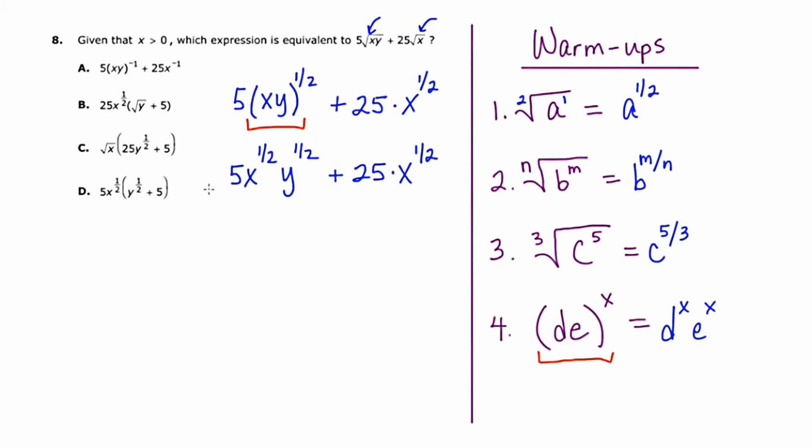Now, as I scan my answer choices, nothing looks exactly like this. But there are a few things that have these one half powers all over the place. Choice d does, choice b does, and even choice c does as well. I'm thinking that the negative exponents are not the direction to go here, because that hasn't really become apparent at any spot. So I'm going to most likely eliminate that.